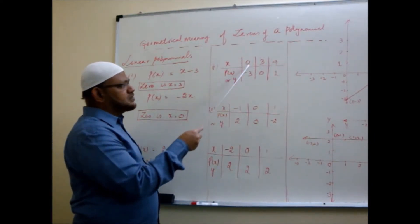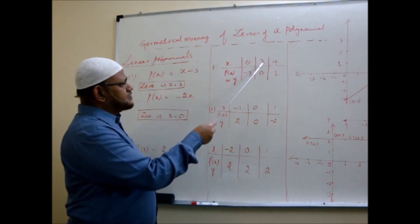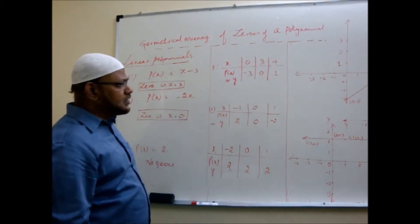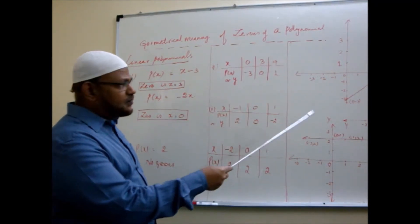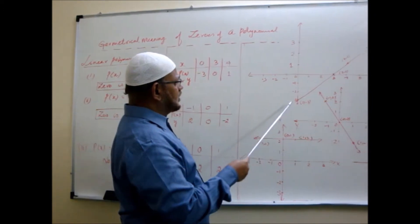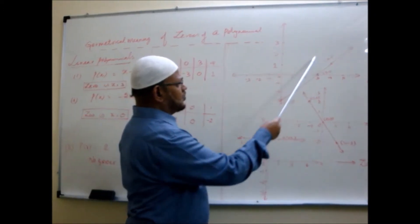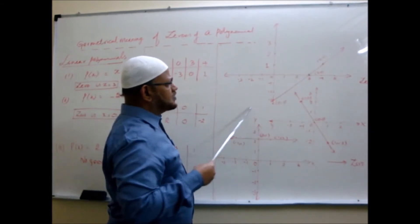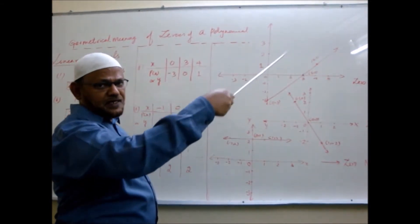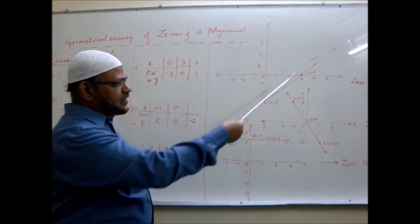These three points — (0, -3), (3, 0), and (4, 1) — we plot in the graph sheet. Joining them, we get a straight line. Since it is linear, we get a line here.